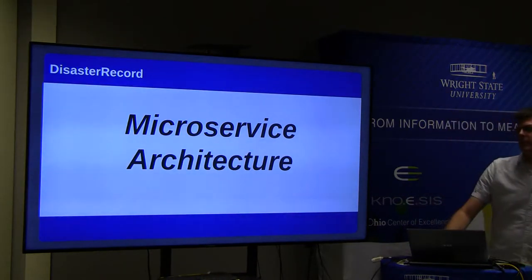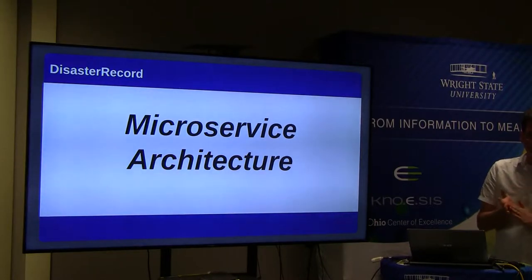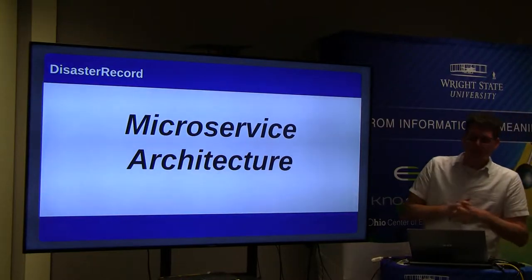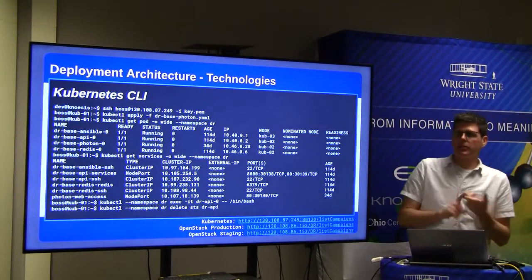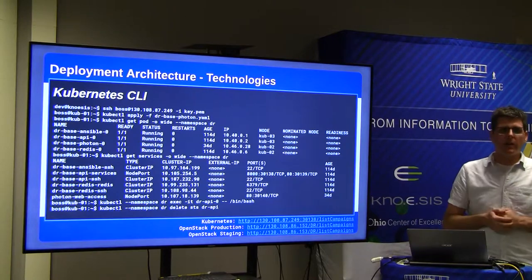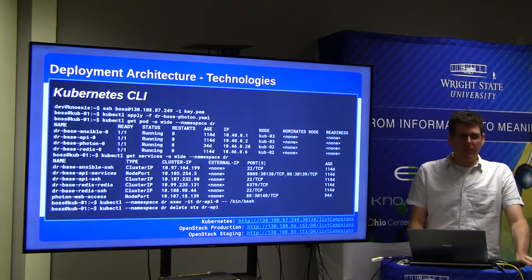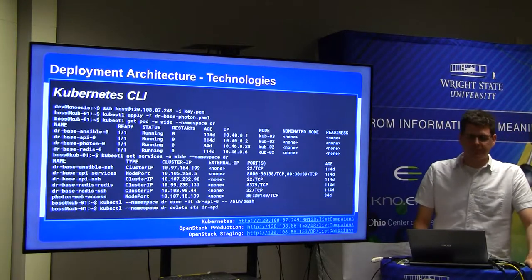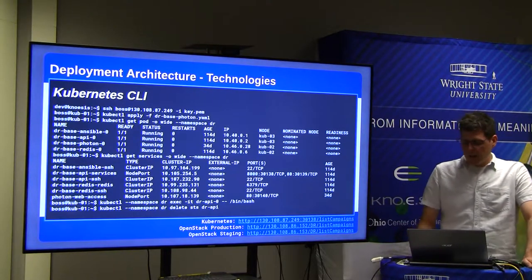That leads us into the microservice architecture. Microservice.io describes it as an architectural style that structures an application as a collection of services that are highly maintainable and testable, loosely coupled, independently deployable, organized around business capabilities, and owned by a small team. There is a Google Drive folder with extensive examples and more detailed information on how to utilize these technologies, which has been shared with some people here and is linked in the slides.